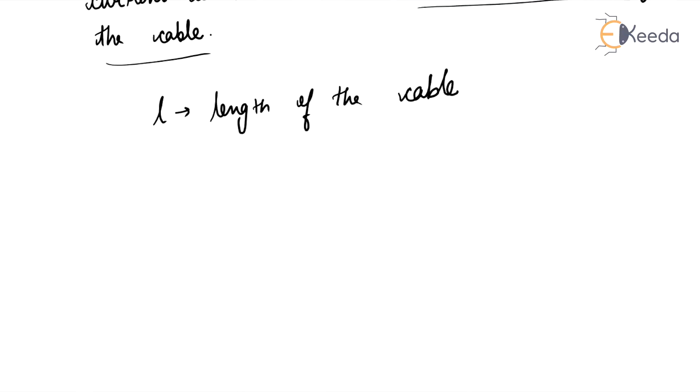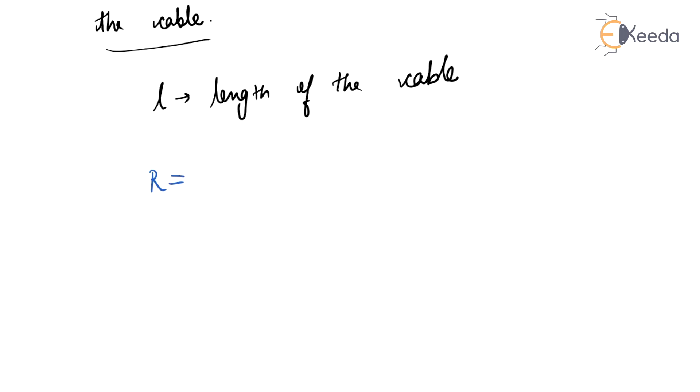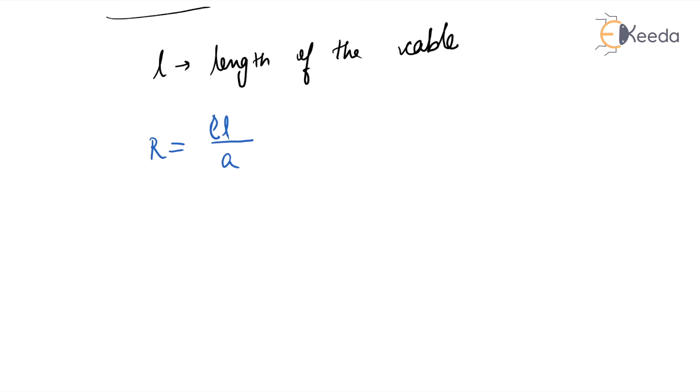Now we know R equals ρL/A, where R is the resistance, ρ is the specific resistance of the material, L is the length of the conductor, and A is the area of the cross section.